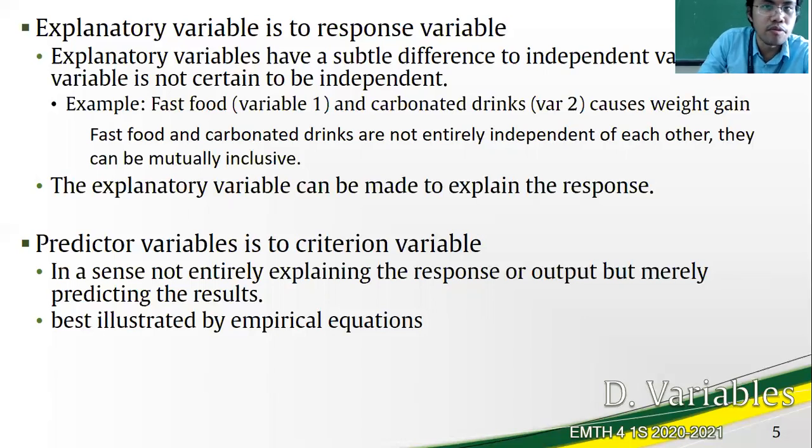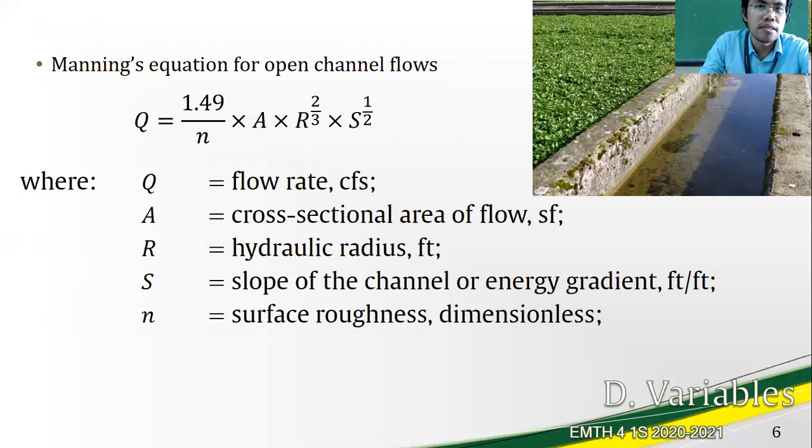Predictor variables are not entirely explaining the response or output but merely predicting the results or criterion variable. This is best explained by empirical equations. These are equations derived from experiments where the relationship is established but could not be as direct as they can be.